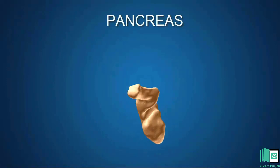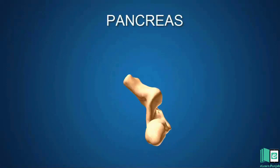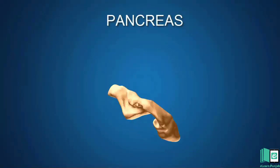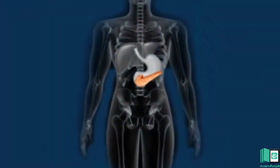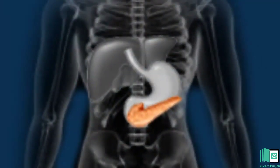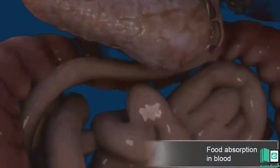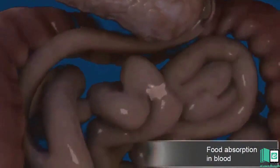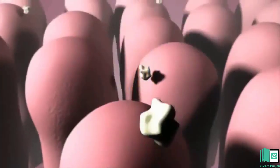The pancreas is situated below the stomach. The pancreas makes juice to digest remaining carbohydrates, proteins, and fats. The absorption of the digested food also occurs in the last part of the small intestine. The inner surface of the small intestine has many finger-like structures called villi. The digested food passes into the blood through the walls of the villi.